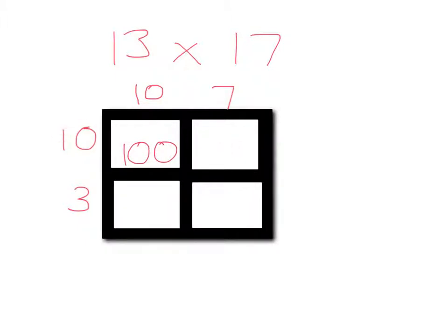Here is 10 times by 7, so 70. Here is 3 times by 10, so 30. And finally, by here is 3 times by 7, which is 21.